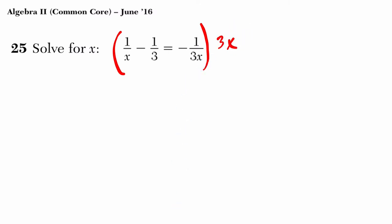Because if we do this, watch what happens. 3x times 1 over x will be our first multiplication. And then we have minus 3x times 1 over 3. And then we have finally 3x times negative 1 over 3x.